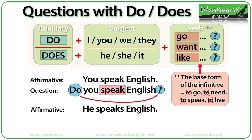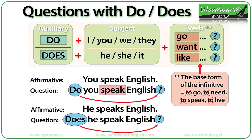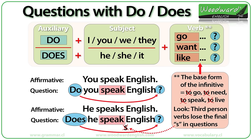Let's look at the next example: He speaks English. We add DOES because it's a question referring to HE. DOES HE. But look — we have SPEAK and not SPEAKS with an S. Why? Because we use the infinitive TO SPEAK but without the TO. Instead of TO SPEAK, it is just SPEAK.